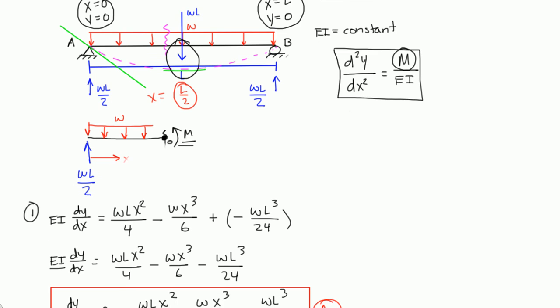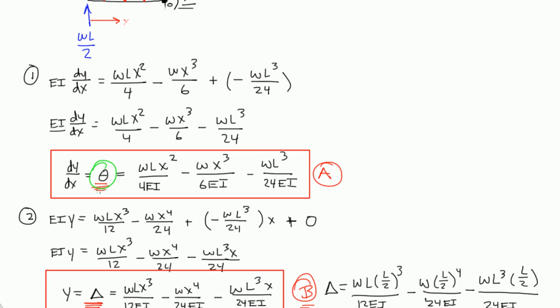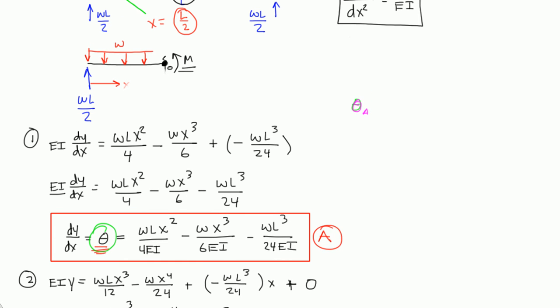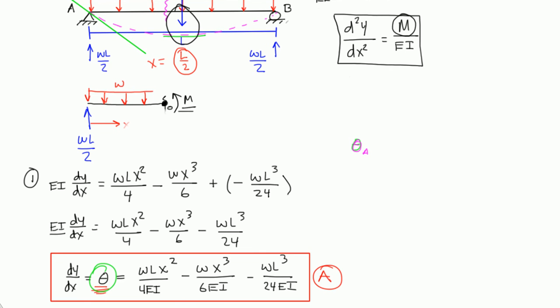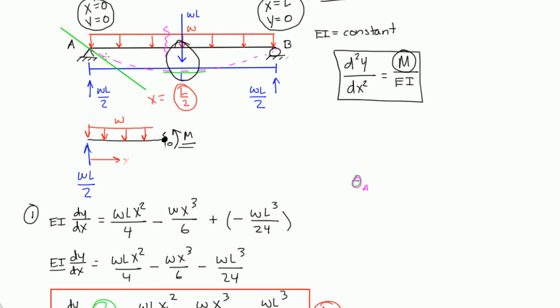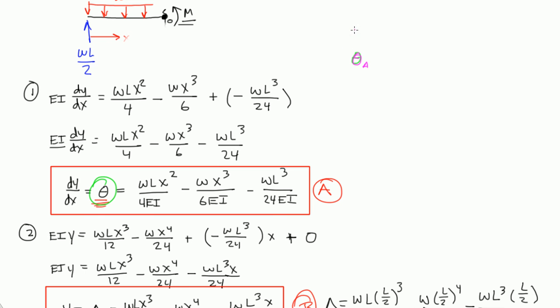we can actually plug it into equation A, because equation A gives us our slope. So if we wanted to find what the slope was at A, we can plug in a value for X into equation A, and the value we'd plug in would be X is equal to zero, because at X equals zero, that's where pin A is located.